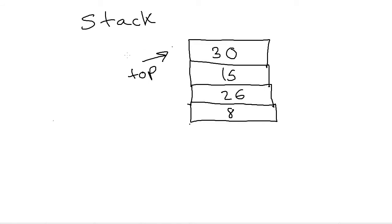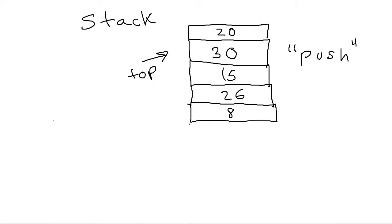If I want to add another number like 20, it can only go on top of the 30. When we add data to the stack, the specific term for that is called pushing — we push onto the stack. If I want to access the stack, the only value visible is the top, which is now 20. We cannot even see the 30, 15, 26, or 8 underneath. You can only ever see, add to, access, or remove from the very top of the stack.